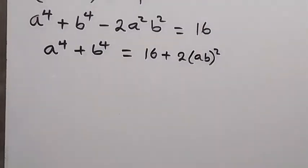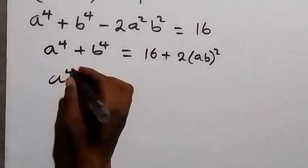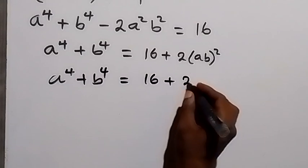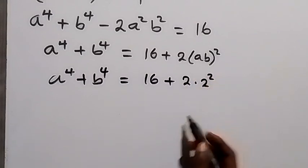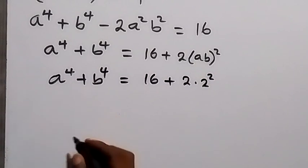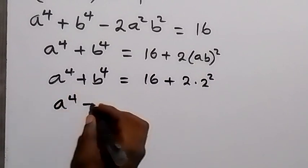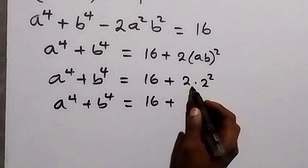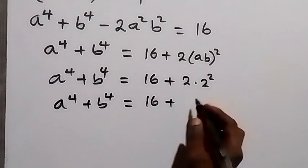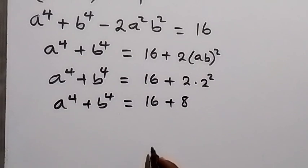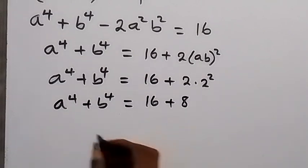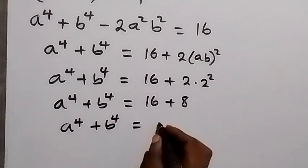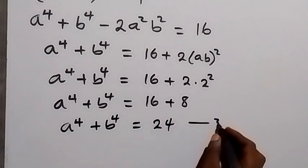So we put it in. Then we have a raised to power 4 plus b raised to power 4 equals 16 plus 2 times 2 squared. This gives us a⁴ plus b⁴ equals 16 plus 2 times 4, because 2 squared is 4, that's 8. So 16 plus 8 gives us a raised to power 4 plus b raised to power 4 equals 24. Let's call this equation 3.